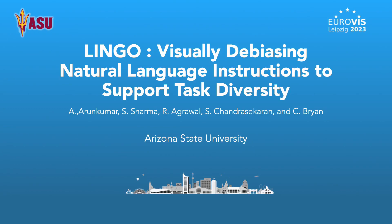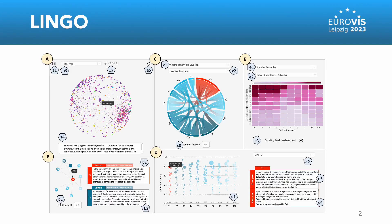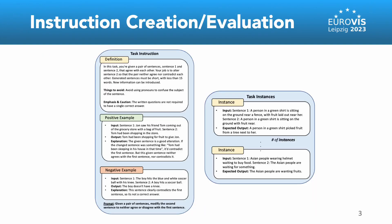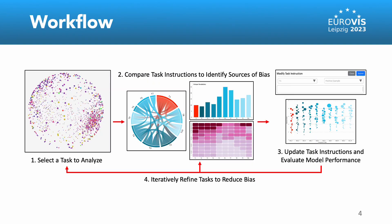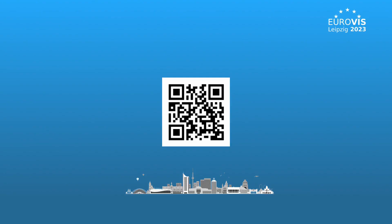We develop LINGO, an end-to-end visual analysis and authoring tool for natural language instructions. LINGO facilitates real-time instruction creation, modification and evaluation with PLMs. It is designed to address real-world challenges faced in benchmark creation by helping authors identify and compare instruction bias pertaining to different types of tasks. Check out our paper for more details.